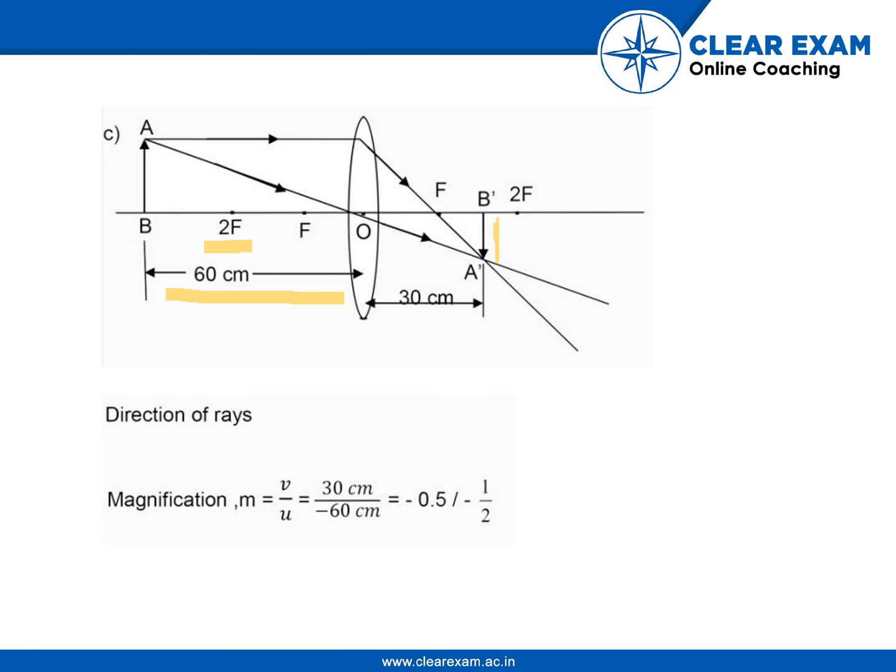This is the image which is formed behind the lens at B. Here we can find the magnification by the formula m = v/u, so 30 centimeters upon minus 60 centimeters, that comes out to be minus 0.5 or minus half.